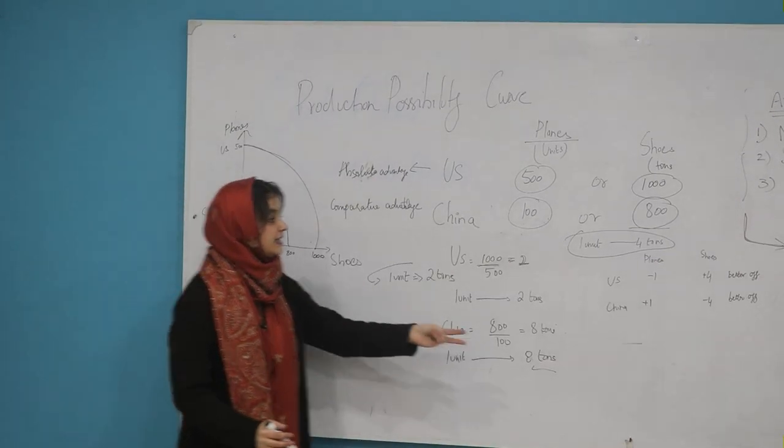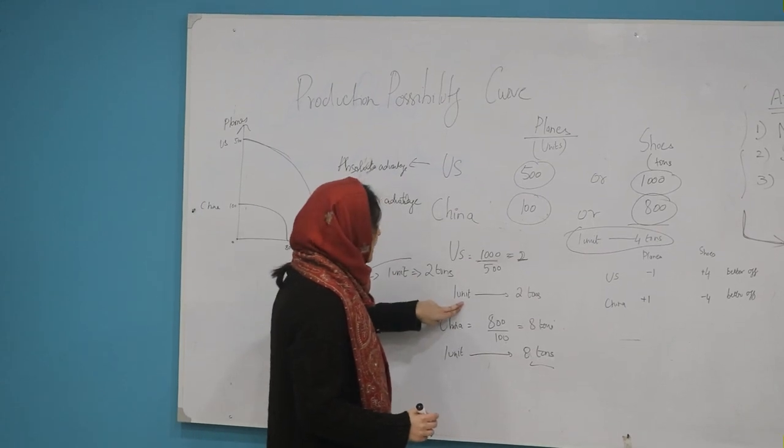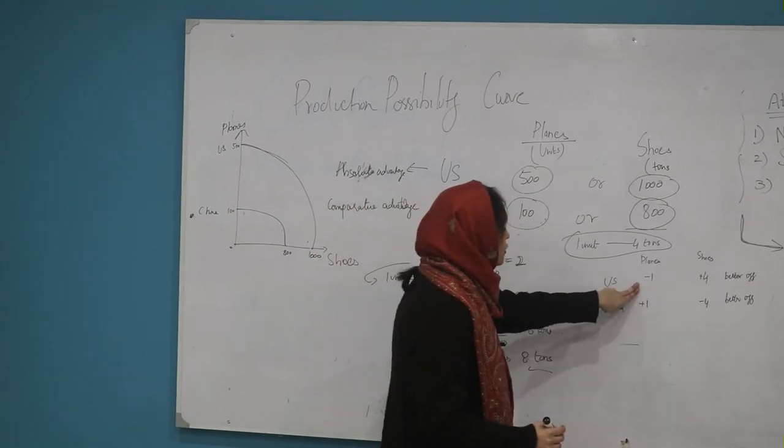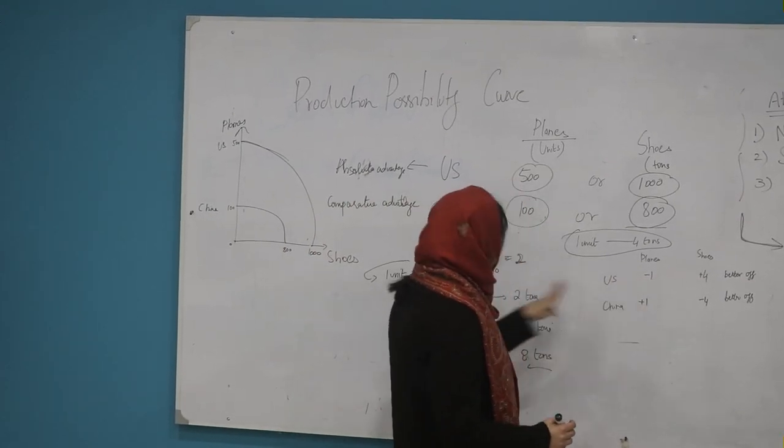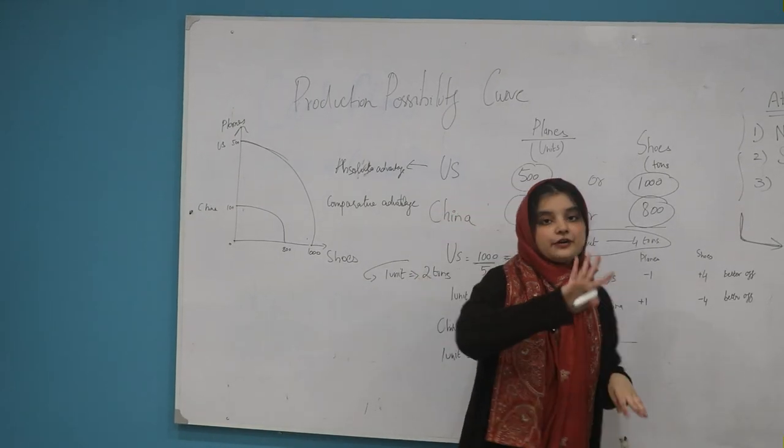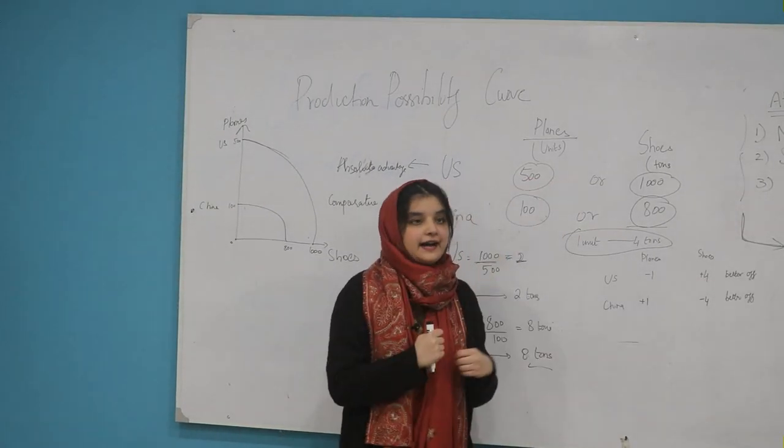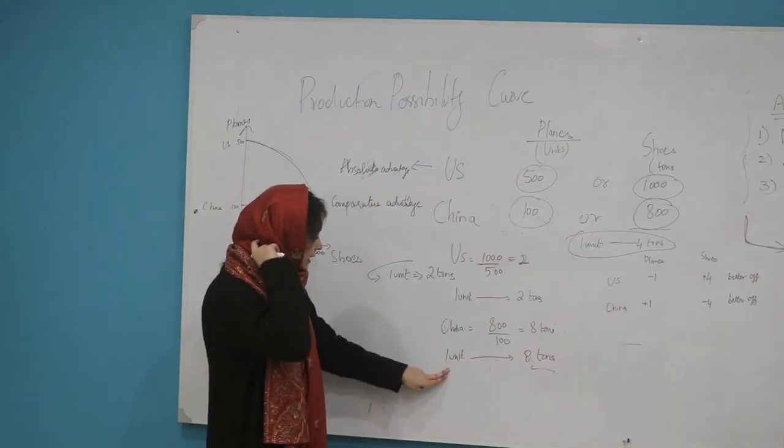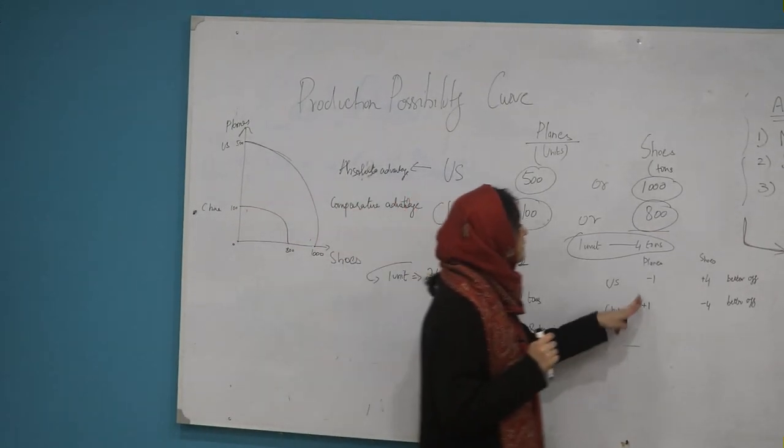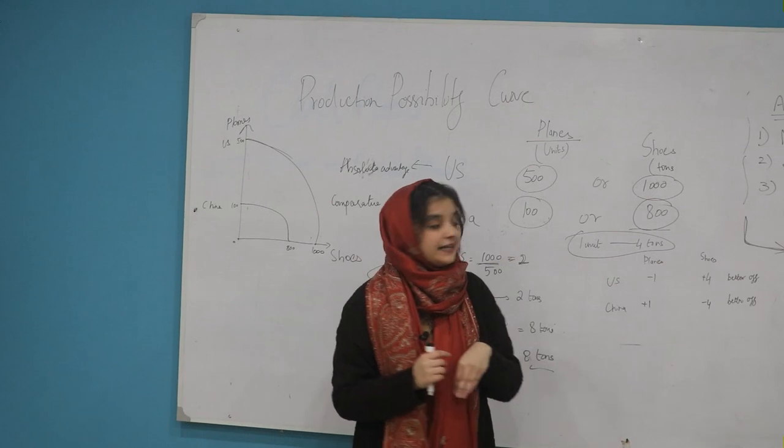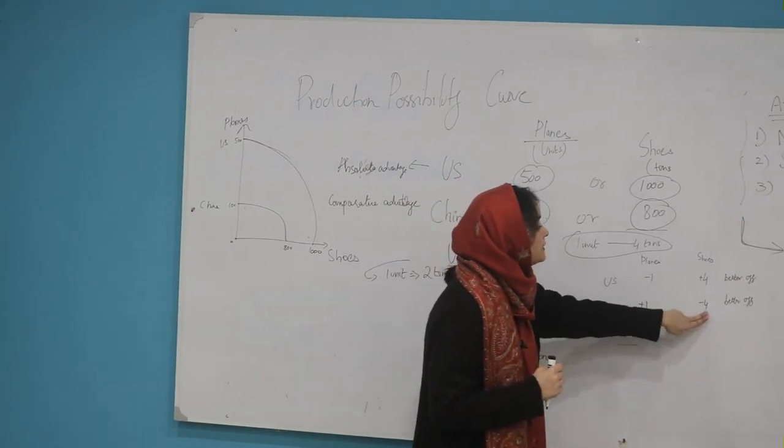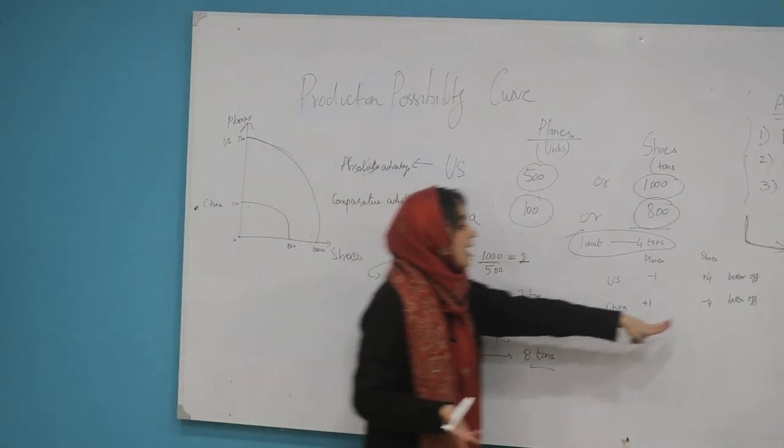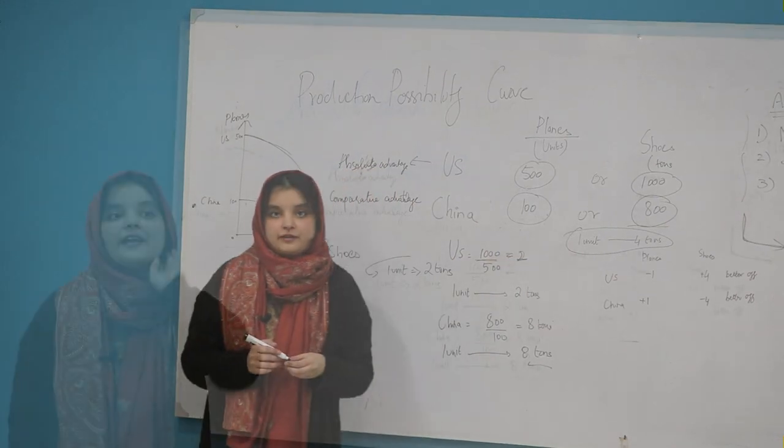How? Before trade, the US had to give up two tons of shoes to get one unit of plane domestically. Now if they trade one unit of plane for four tons of shoes with China, they gain additional shoes. Similarly, China previously had to give up eight tons of shoes to produce one unit of plane. Now by importing from the US, they only give up four tons of shoes for one plane. So China is better off too.